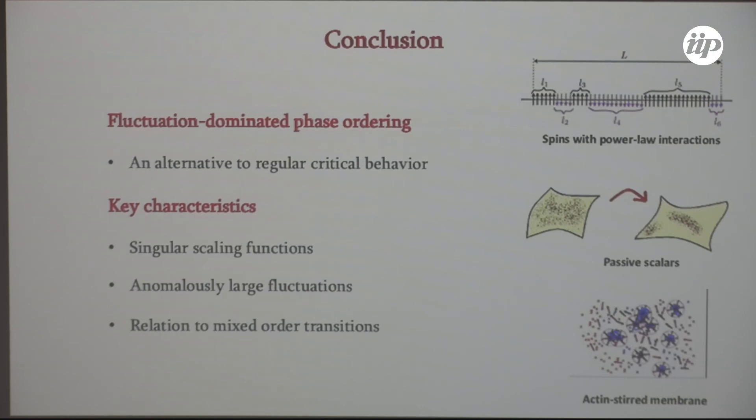Conclude now. What I've told you is simple. There is a sort of state that is coming up in many sorts of systems. It's called fluctuation dominated order. This is our name for it. It's an alternative to critical behavior. If you find large bits of things that are moving around, maybe you can look for these signatures. The key characteristics is that the scaling functions are singular. The fluctuations are enormous. There is a relation to mixed order transitions, which we have not actually sorted out in all situations, but which we would like to. Thank you.